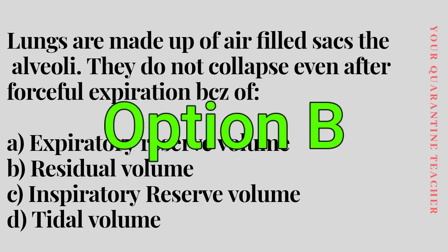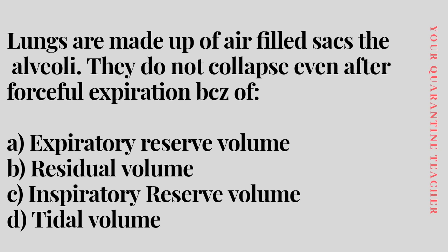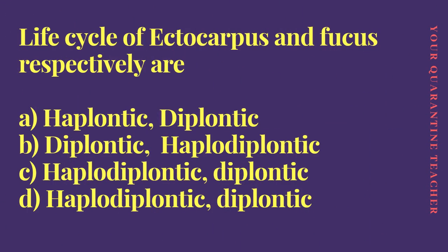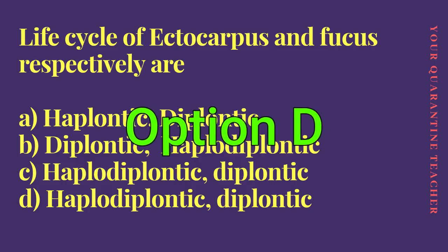Next question: life cycles of Ectocarpus and Fucus respectively are. Option A: haplontic, diplontic. Option B: haplodiplontic, haplodiplontic. Option C: haplodiplontic. Option D: haplodiplontic, diplontic. The answer is Option D — haplodiplontic and diplontic.